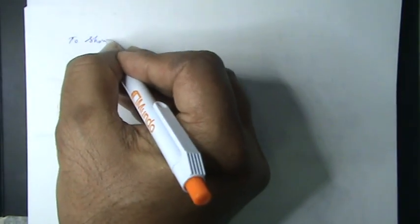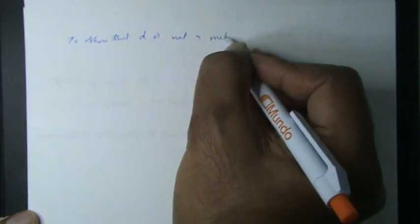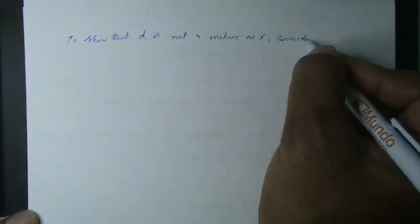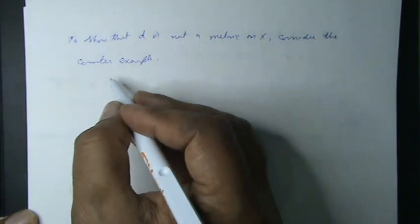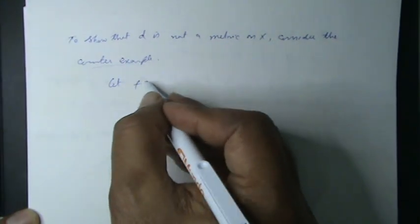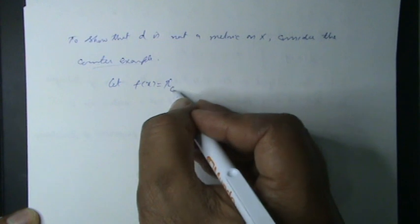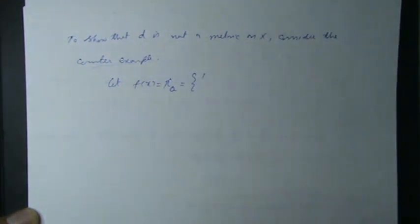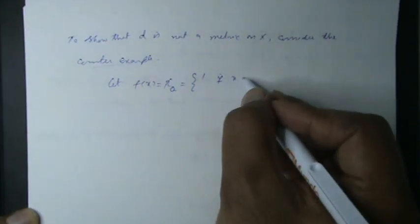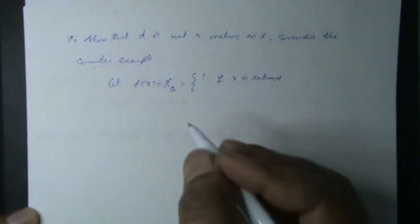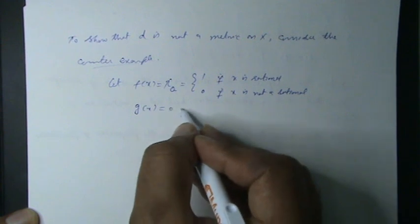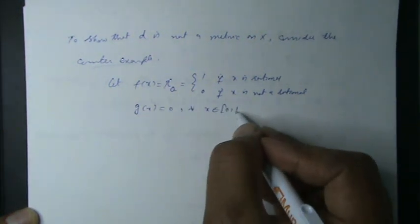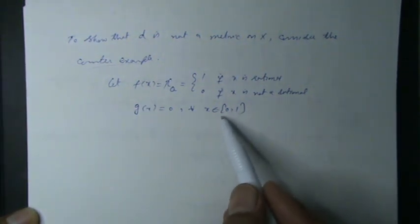To show that D is not a metric on X, consider the following counterexample. Let f of x equal 1 if x is rational, and 0 if x is not rational, that is irrational. Let g of x equal 0 for all x belonging to the closed interval 0 comma 1, for both rational and irrational points in this interval.